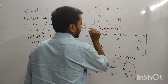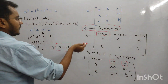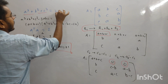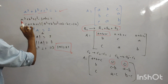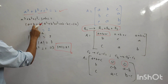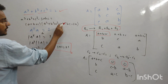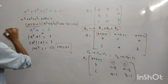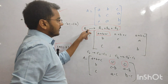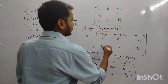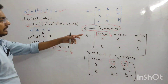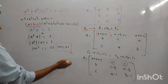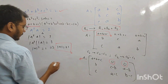यह row operation इसलिए किया ताकि A+B+C मिल जाए। क्योंकि given है a³ + b³ + c³ = 2, और identity है: a³ + b³ + c³ - 3abc = (a+b+c)(a² + b² + c² - ab - bc - ca). तो A+B+C का यहाँ use आएगा। यह मिल गया है, इसलिए यह row operation किया।